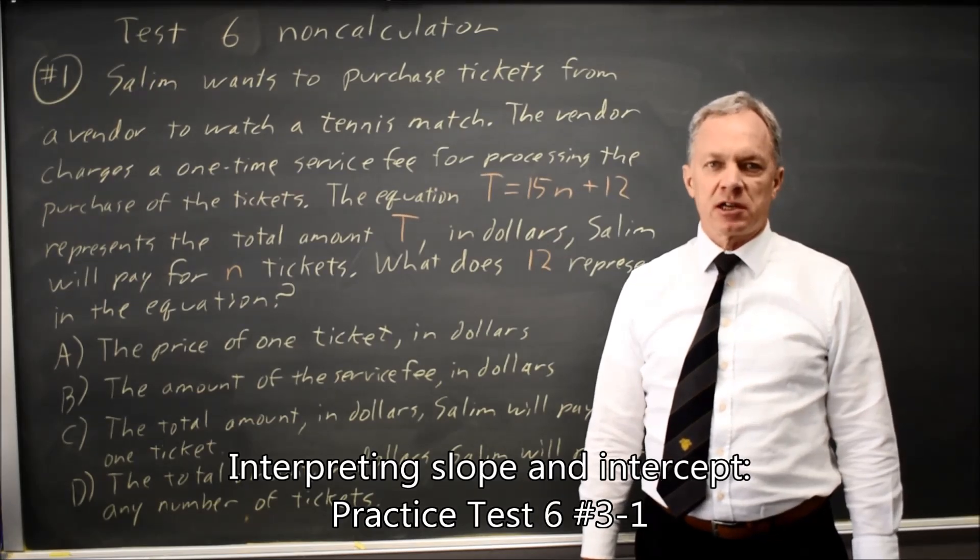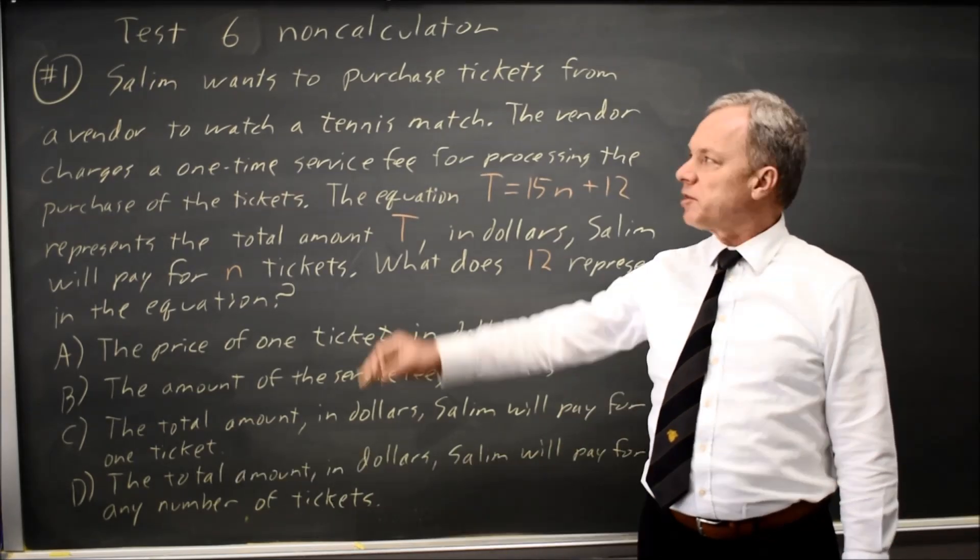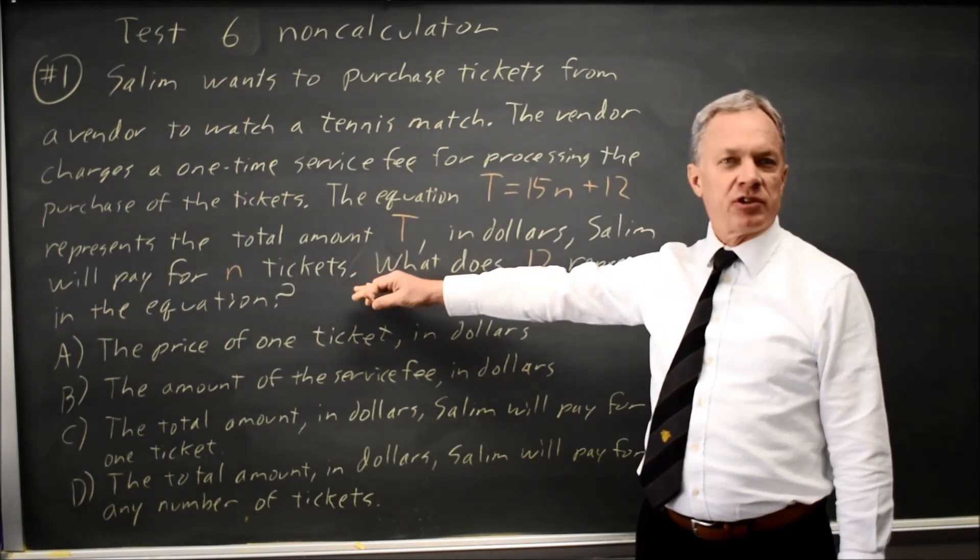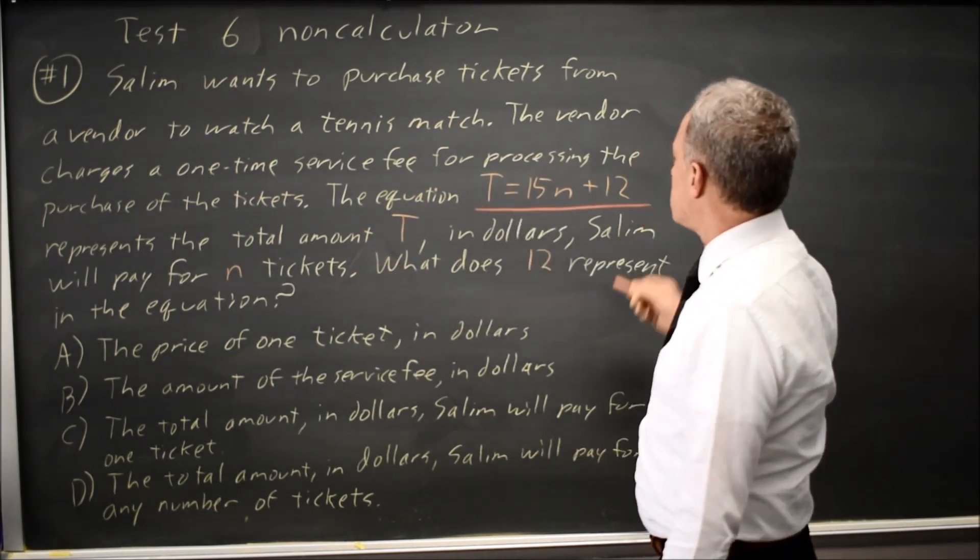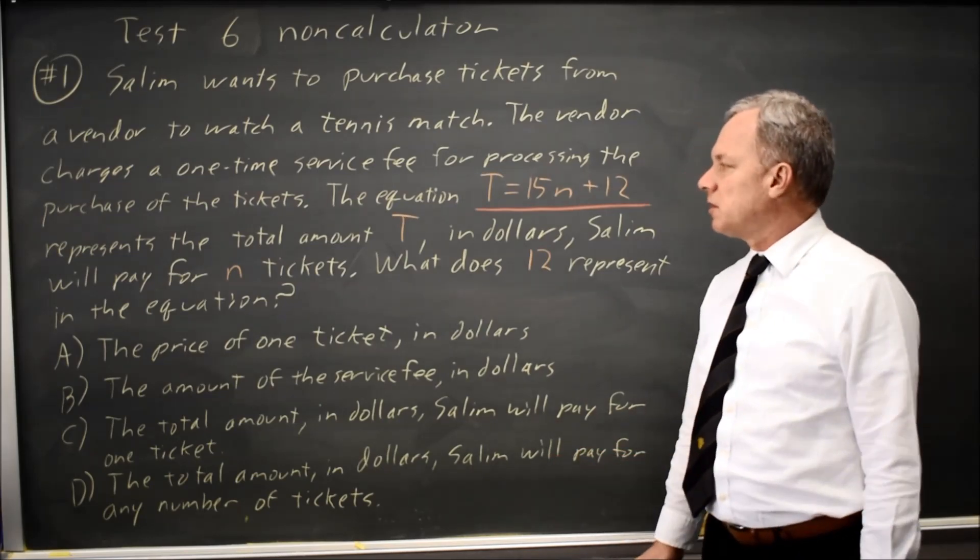This is SAT test 6, non-calculator question number 1. College Board gives us a paragraph providing the context for a linear equation, T equals 15n plus 12.